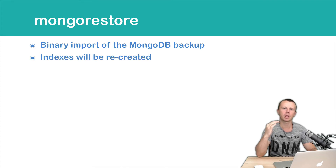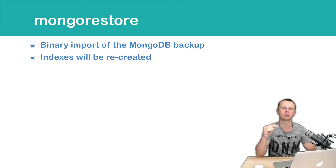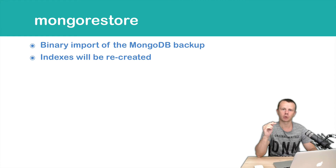Each collection is dumped in BSON format, which means it stores data about field values along with BSON value types. If you restore data from the MongoDump, then indexes will be recreated.